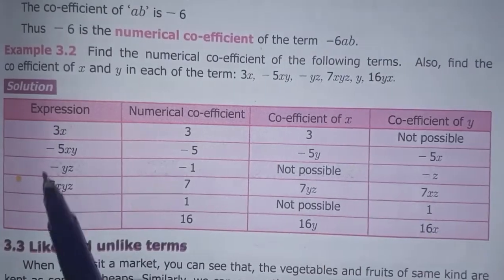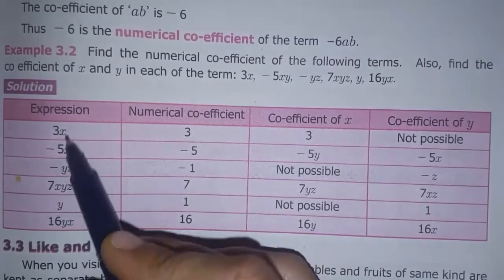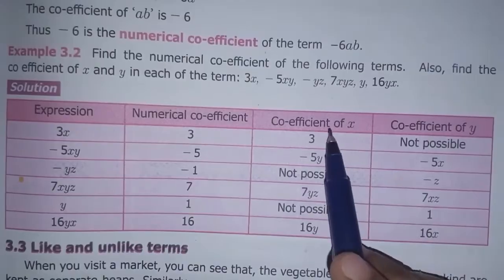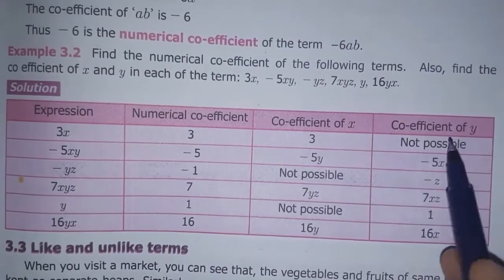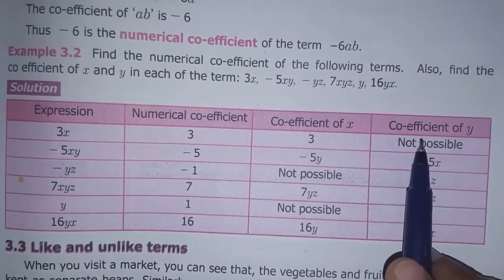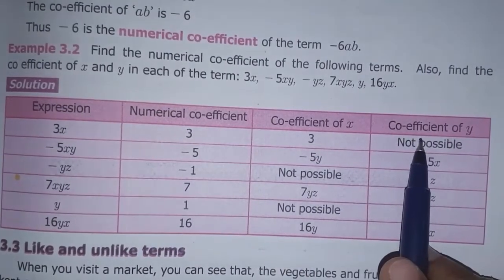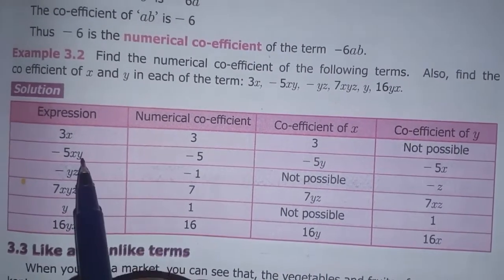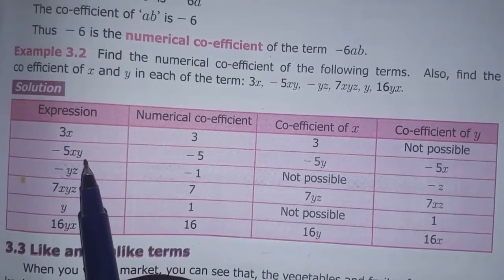We have three columns: numerical coefficient, coefficient of x, and coefficient of y. The coefficient is the number part close to the variable.